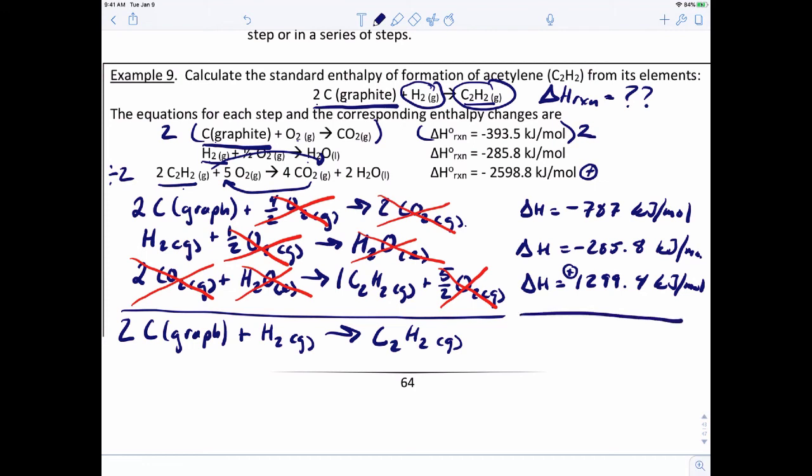So now for the enthalpies, all we have to do is take our values. We got negative 787 kilojoules per mole plus negative 285.8 kilojoules plus 1299.4 kilojoules. That's going to give us a grand total for the enthalpy of this reaction, a positive 226.6 kilojoules per mole.